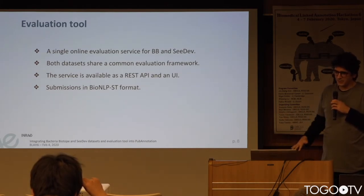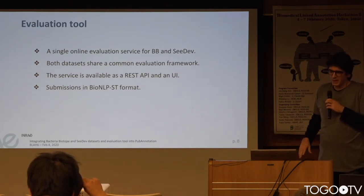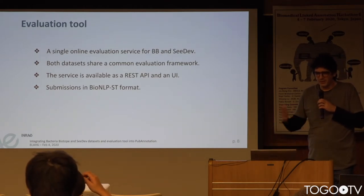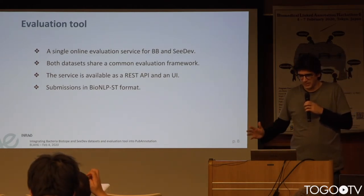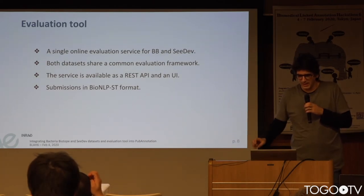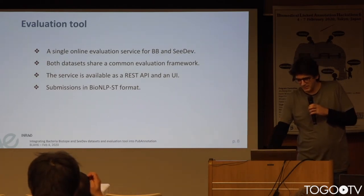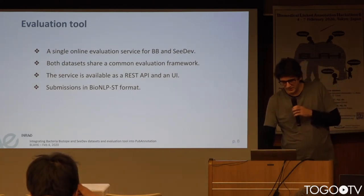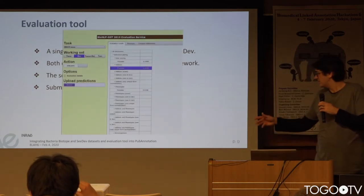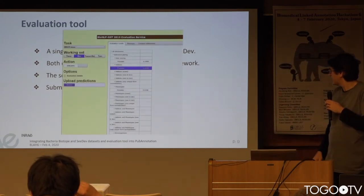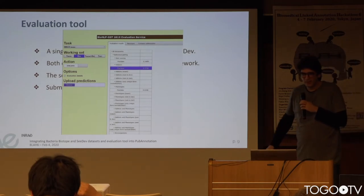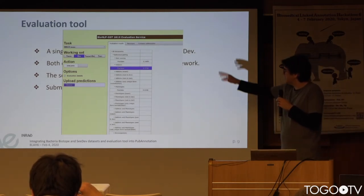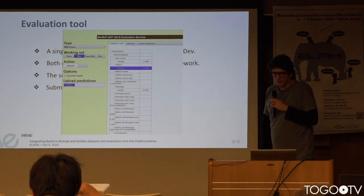Currently, submissions are accepted in BioNLP PST format, so we will have to build something that accepts the PubAnnotation format. This is what it looks like — you upload the predictions and it gives you a lot of scores.